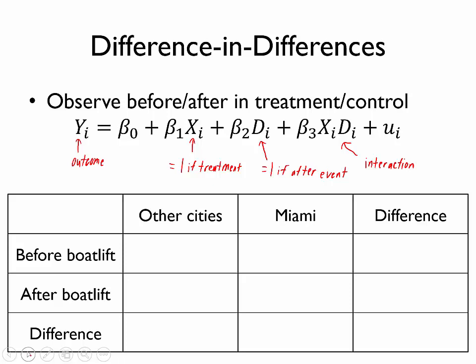Okay, so in this table, we are going to consider the predicted value of the outcome. So in this case, a predicted wage for four different groups. And those four groups are going to be defined by either being in Miami or being in some other city, this is the control cities, and also looking both before the boat lift happened and after the boat lift happened.